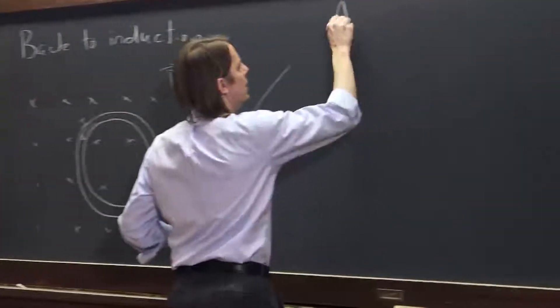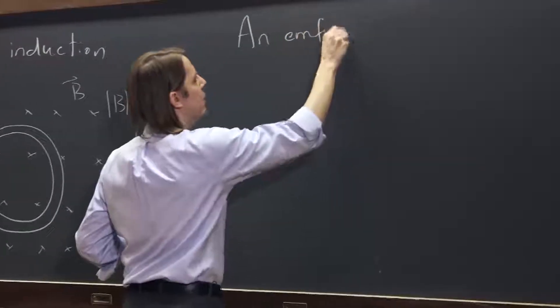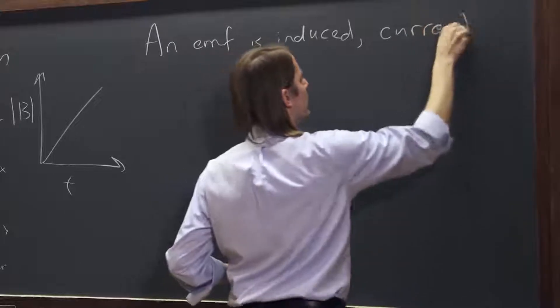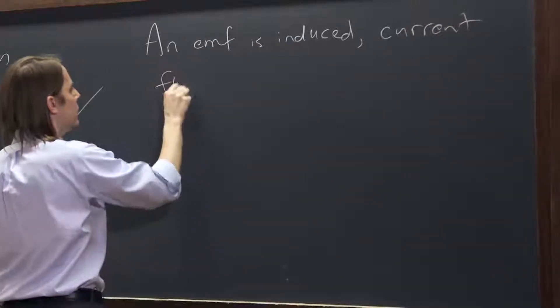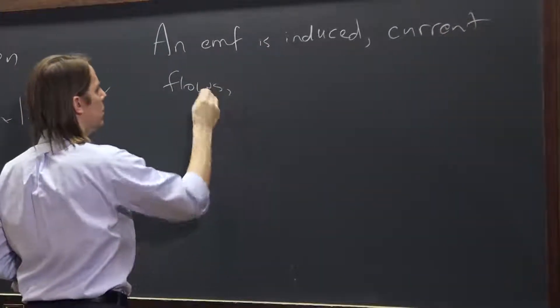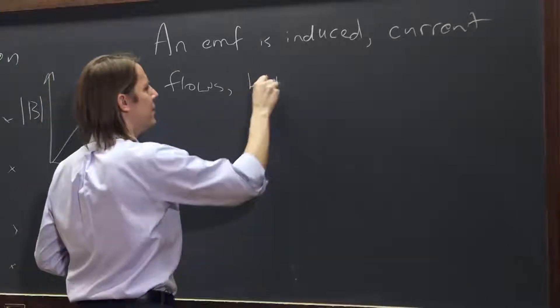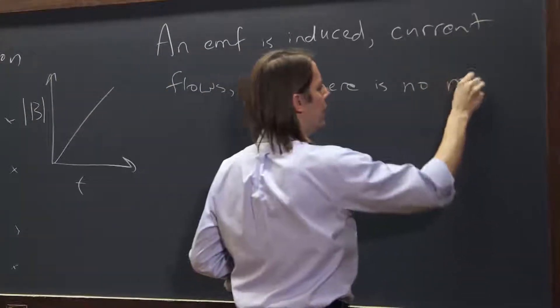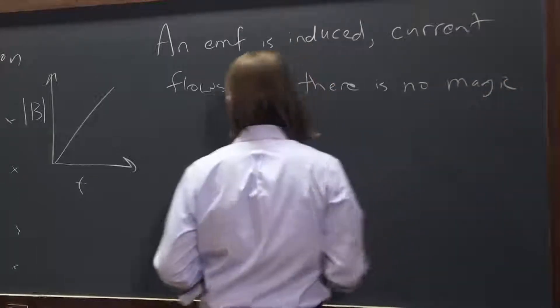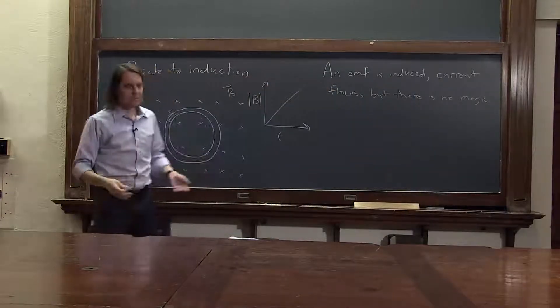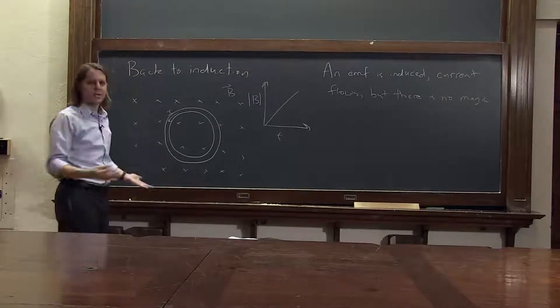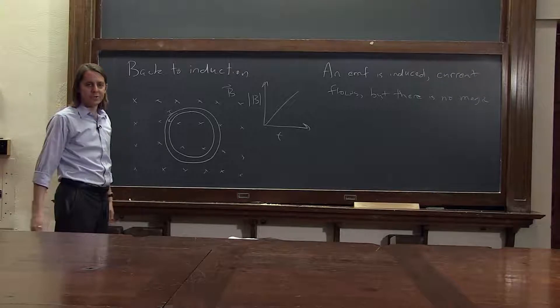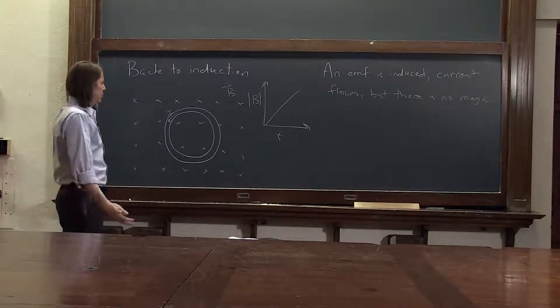So an EMF is induced, current flows, but there is no magic. Why does the current flow? It's not magic. It's charges. Charges start to move. There has to be a reason charges would move. Why do they move?